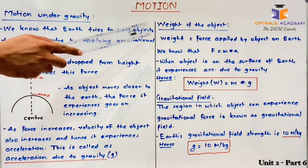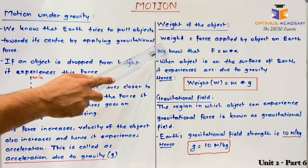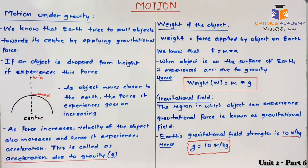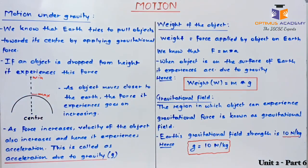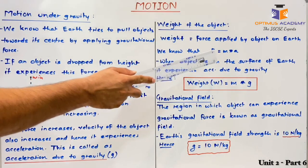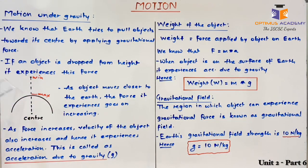Now we will move to our next topic — weight of the object. Mass and weight are two different physical quantities. Mass is the total content of the object, whereas weight is the force applied by the object on the surface of the earth. Weight is nothing but force. The formula for force is F = M × A, where M is mass and A is acceleration. When an object is on the surface of the earth, it experiences acceleration due to gravity.